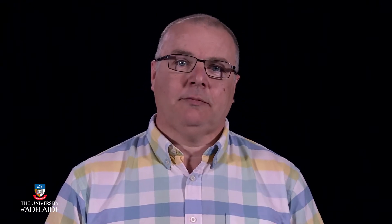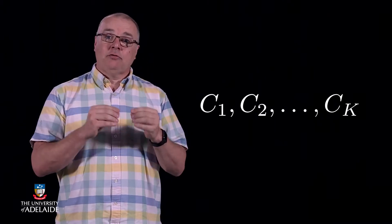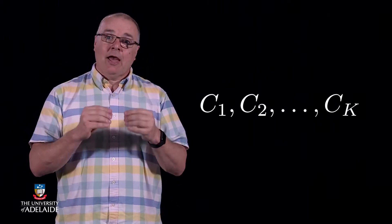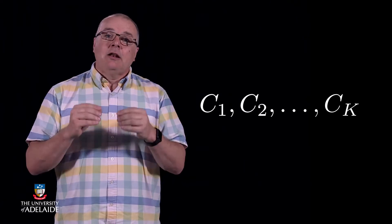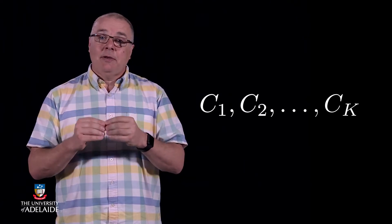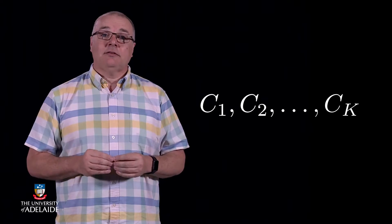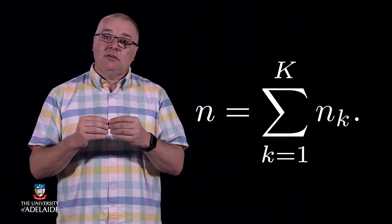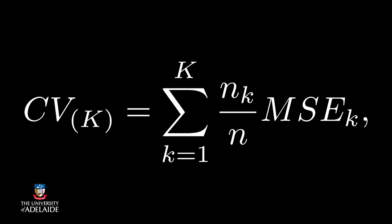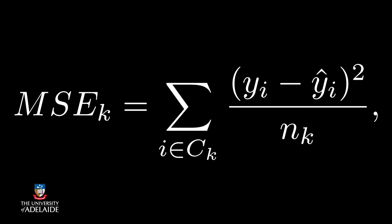Label each part C_k, where k goes from 1 to big K, where K is the number of folds. Let the number of observations in C_k be n_k, so that the cross-validation estimate of the prediction error is defined where ŷ_i is the fitted value for observation i for the model with the k-th fold removed. MSE here stands for mean squared error, a very common error measure.